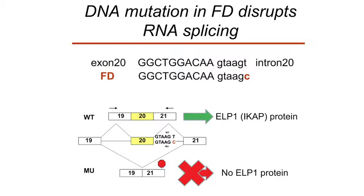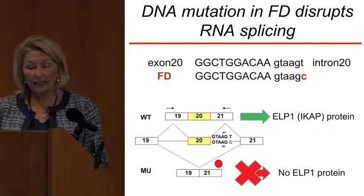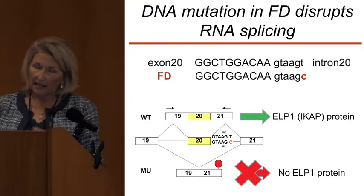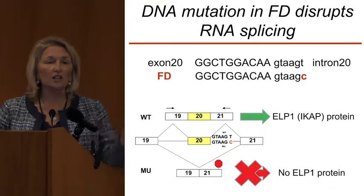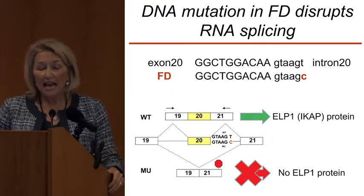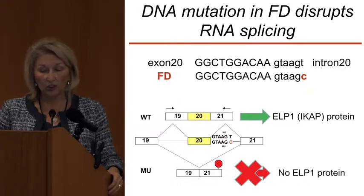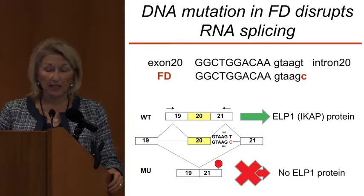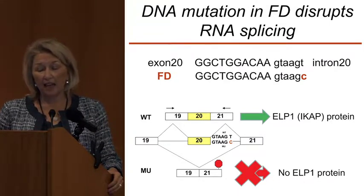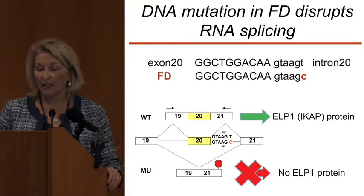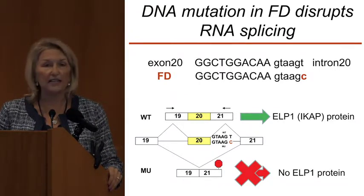This single base change — a T to C change in patients that have FD — when they have it homozygous, meaning they have two copies of this, what it does is it causes a disruption of something called RNA splicing in a gene that we called for many years IKBKAP, now we call it ELP1, or elongator protein one. What happens in the normal case is exon 19 joins exon 20 joins exon 21, and this piece of the gene contains instructions for making a protein. What happens with this base change is that we end up with exon 19 joining to 21. The instructions are not appropriate and therefore we don't get protein made. This is what happens in patients with FD — they don't have enough ELP1 protein.